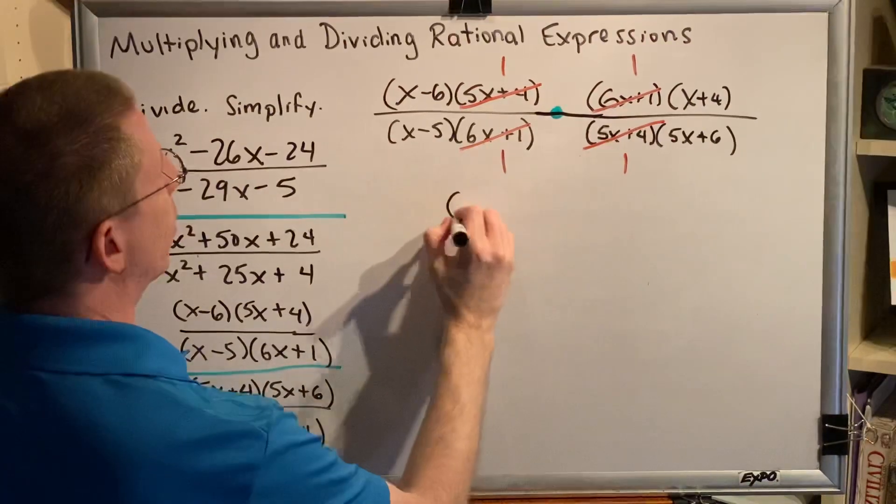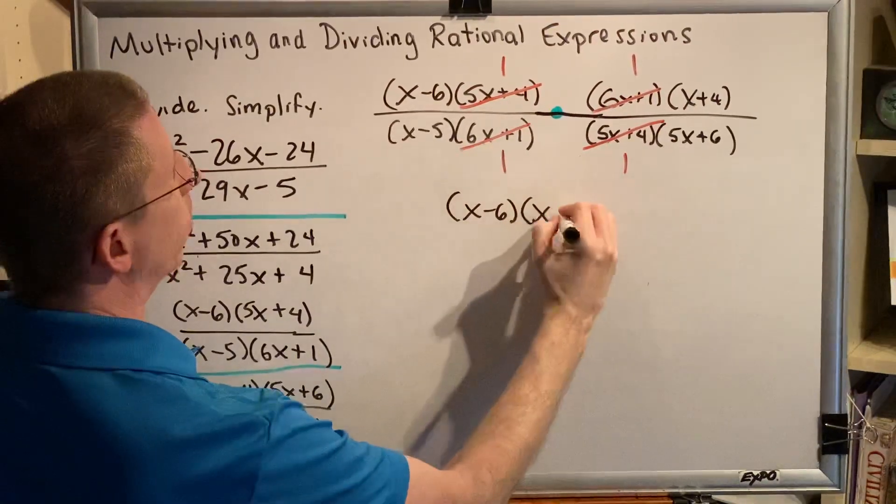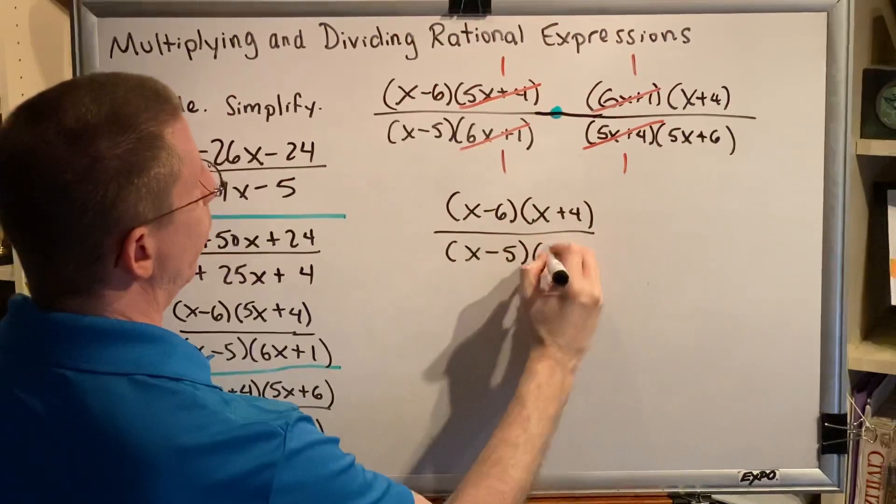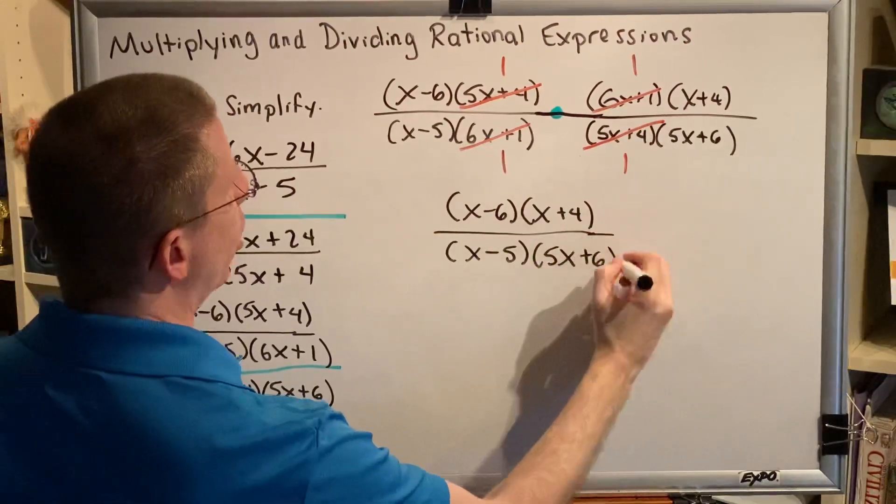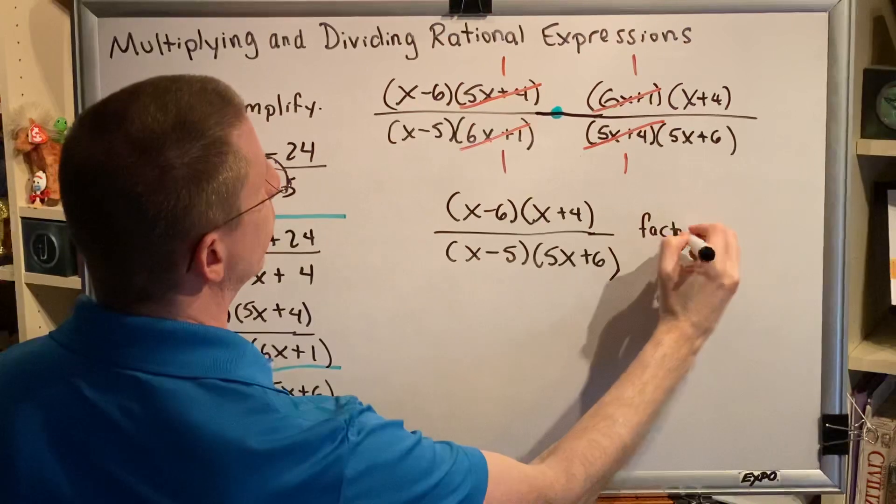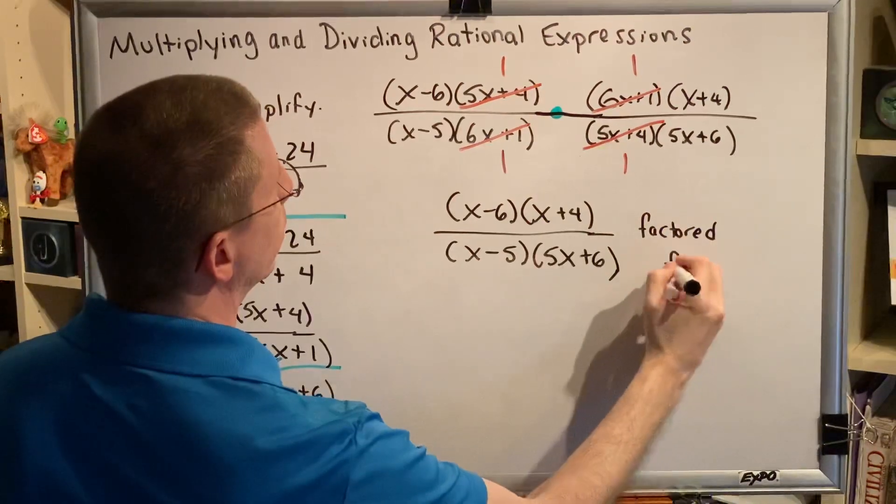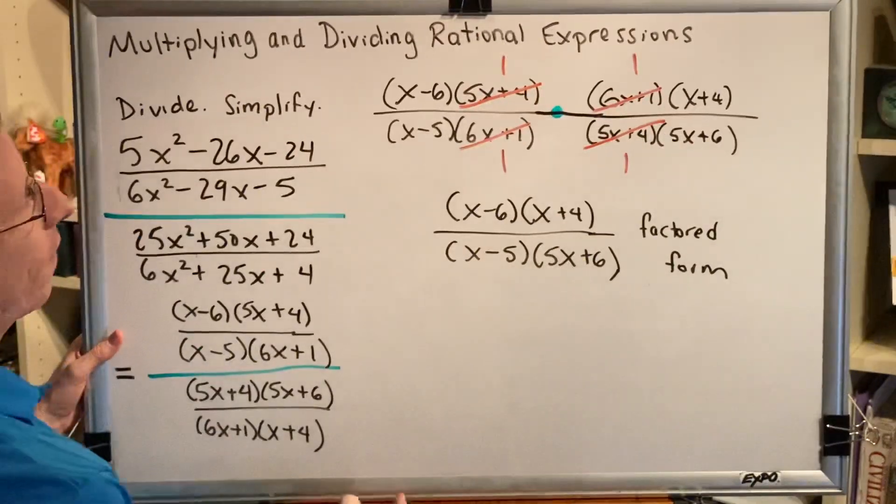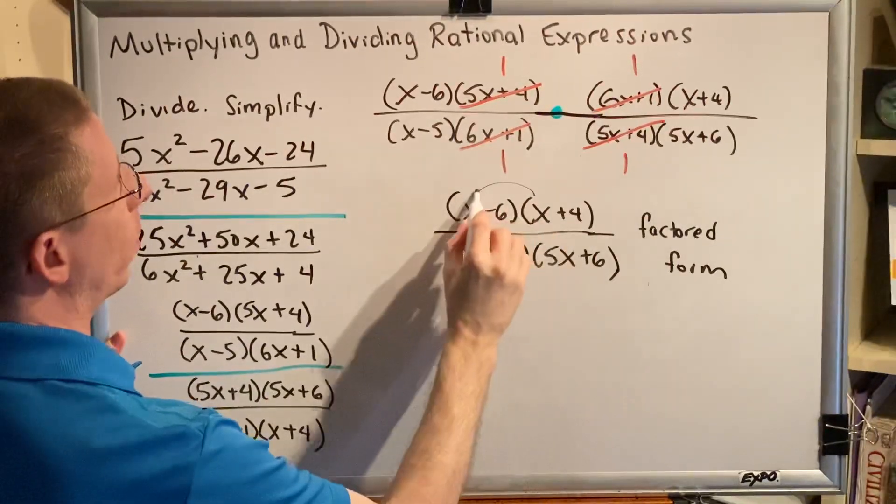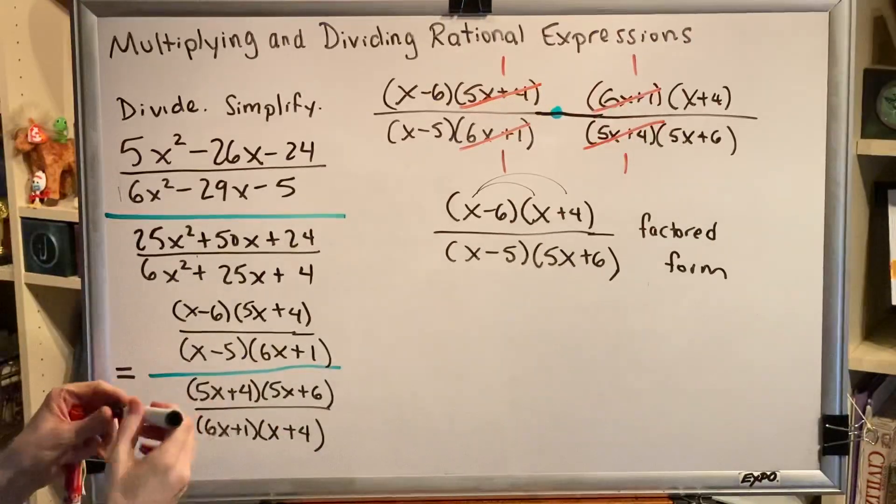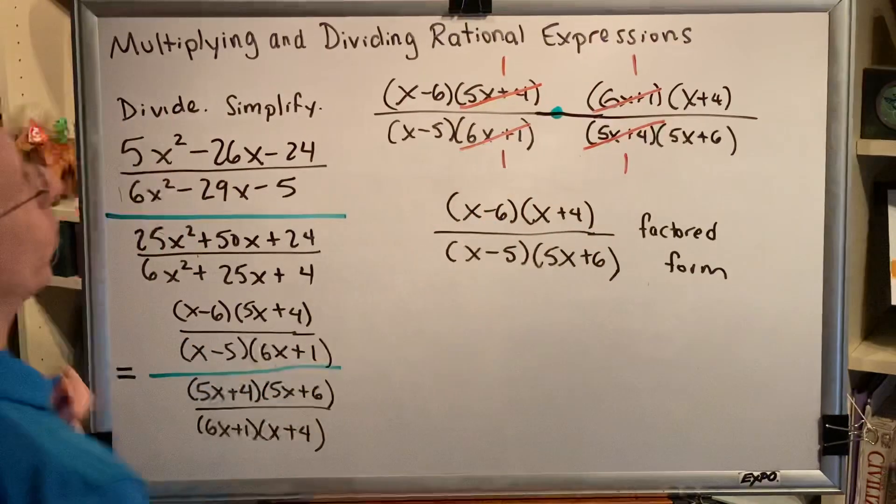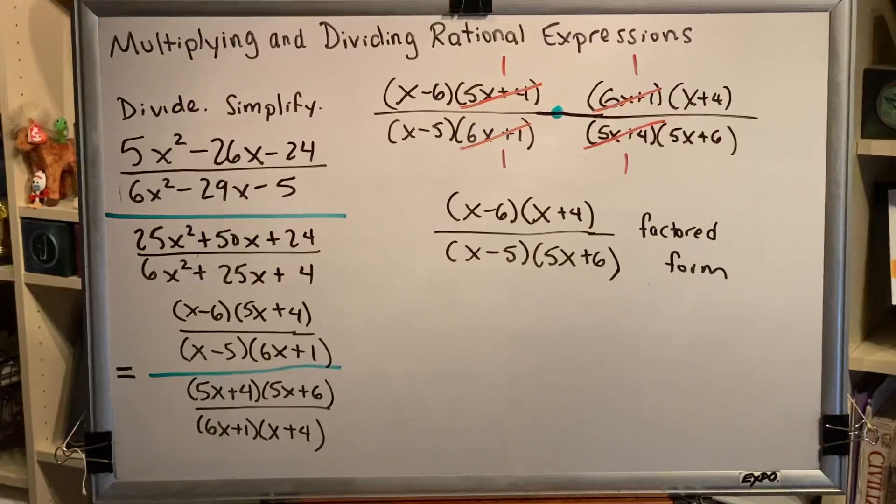(x - 6)(x + 4) over (x - 5)(5x + 6). This is called factored form of our final answer. x - 6 is a factor. x + 4 is a factor. Do not FOIL these to create a trinomial. That is not what MyMathLab is looking for. That is not what the software platform that we're using for this class is looking for. Leave your answer in factored form. And that's the end of this problem.